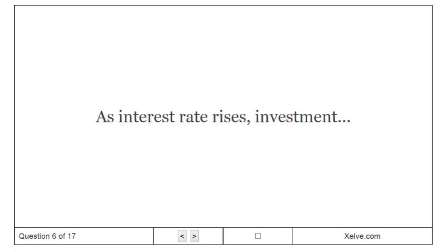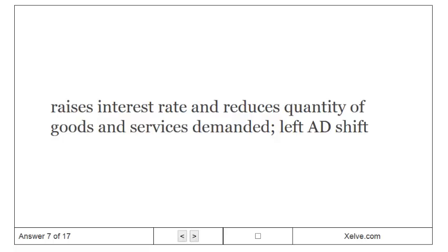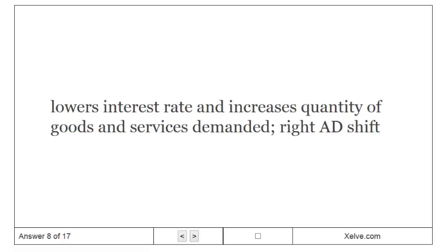As the interest rate rises, investment falls. Contractionary policy raises the interest rate and reduces the quantity of goods and services demanded — a left AD shift. Expansionary policy lowers the interest rate and increases the quantity of goods and services demanded — a right AD shift.